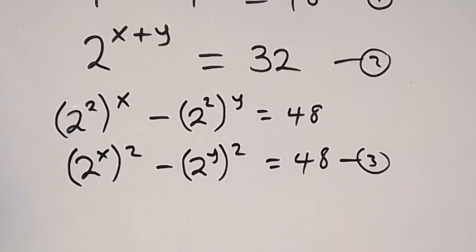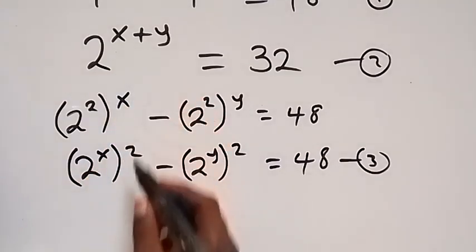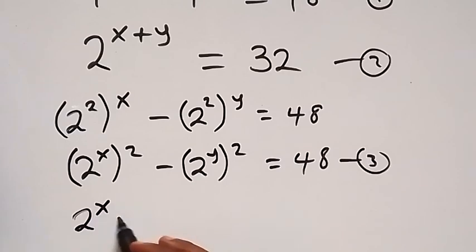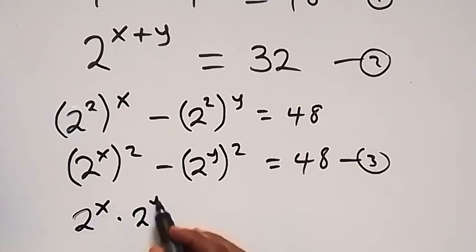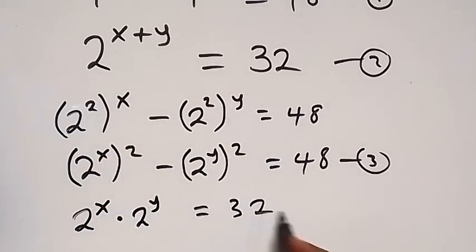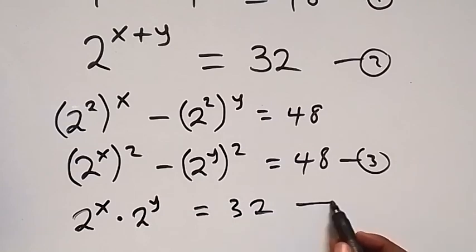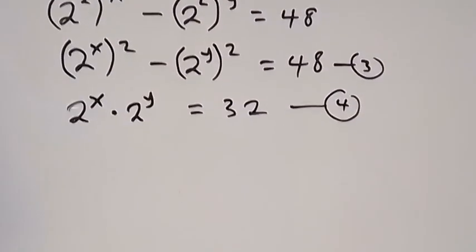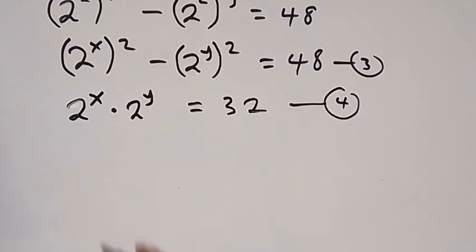From equation 2, applying the law of indices and separating, this becomes 2 raised to power x multiplied by 2 raised to power y, which equals 32. We label this as equation 4.